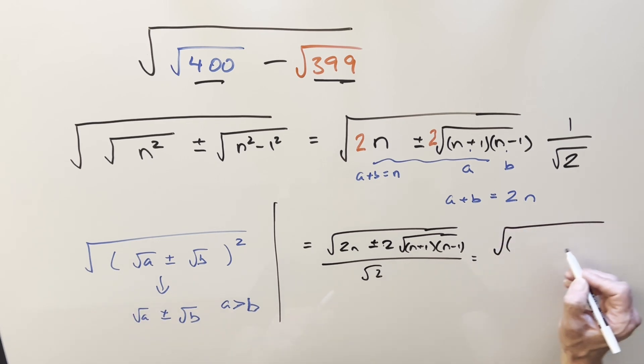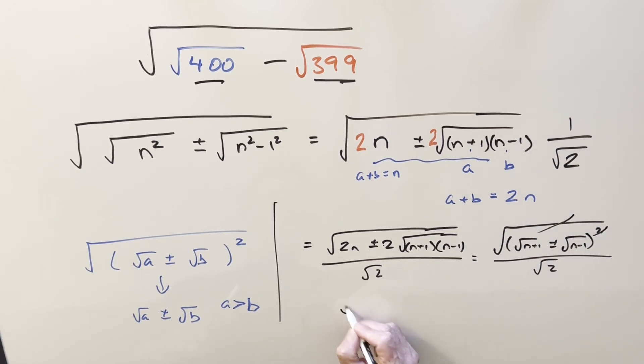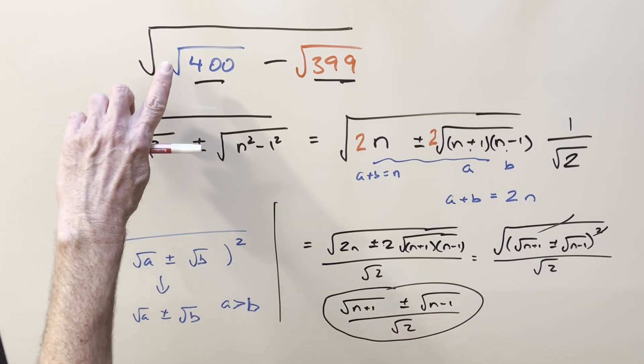So it's going to be square root of this whole thing squared, where square root of a is going to be square root n plus one plus or minus square root n minus one all over square root of two. But then you essentially cancel that with that. And so what you're left with is square root n plus one plus or minus square root n minus one over square root of two. And this is going to be our formula for any of these kind of problems.